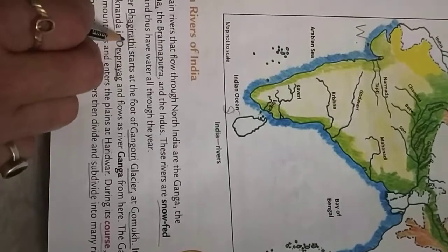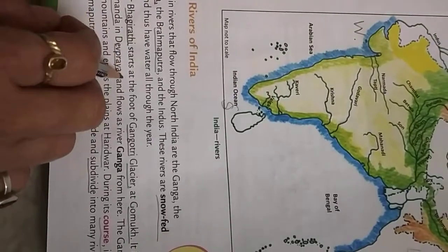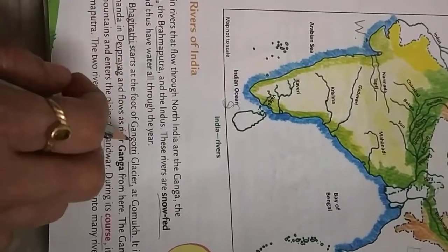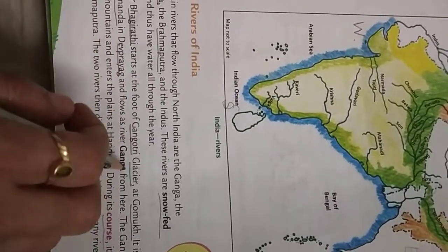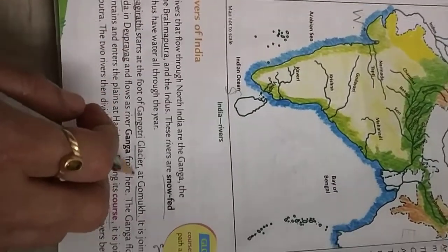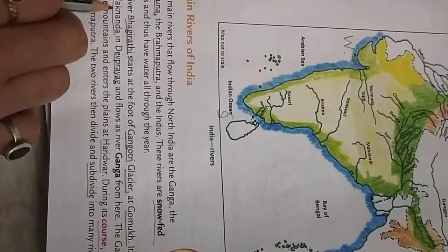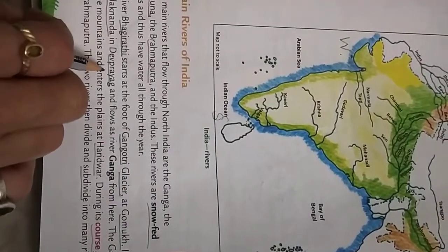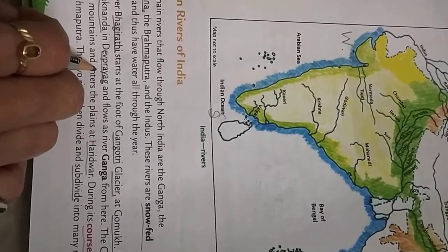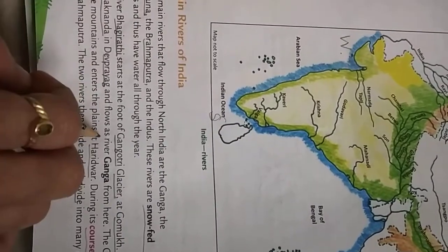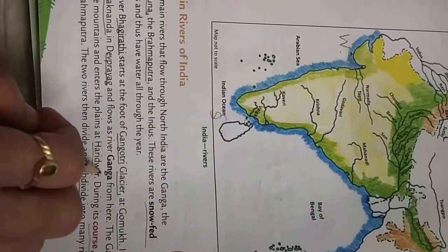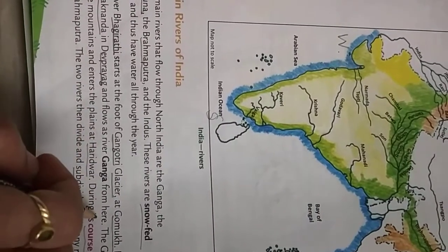River Bhagirathi starts at the foot of Gangotri Glacier at Gomuk. It is joined by Alaknanda in Dev Prayag, and flows as river Ganga from there.